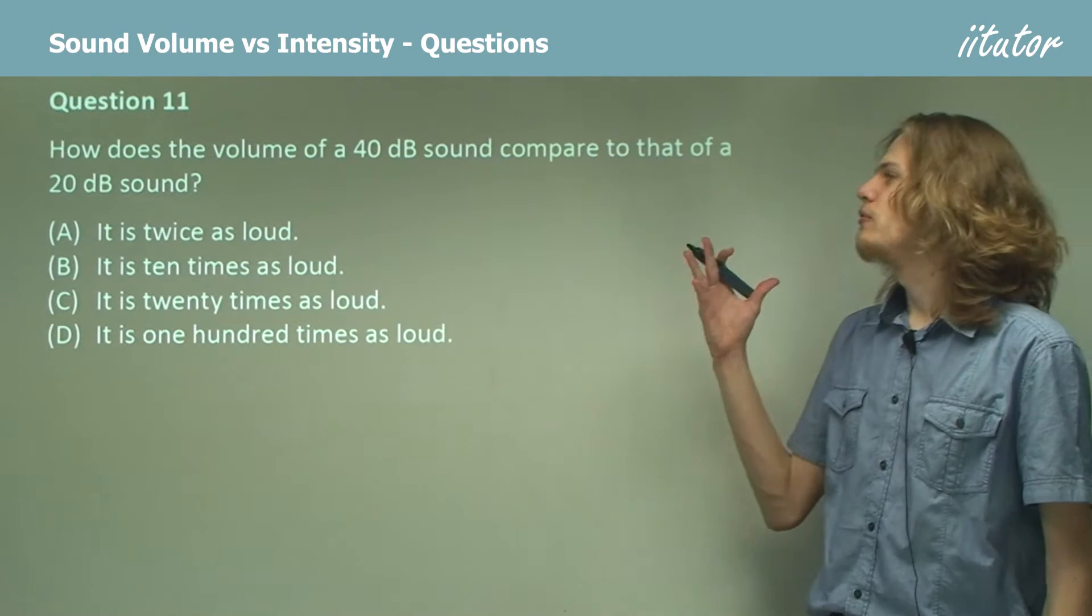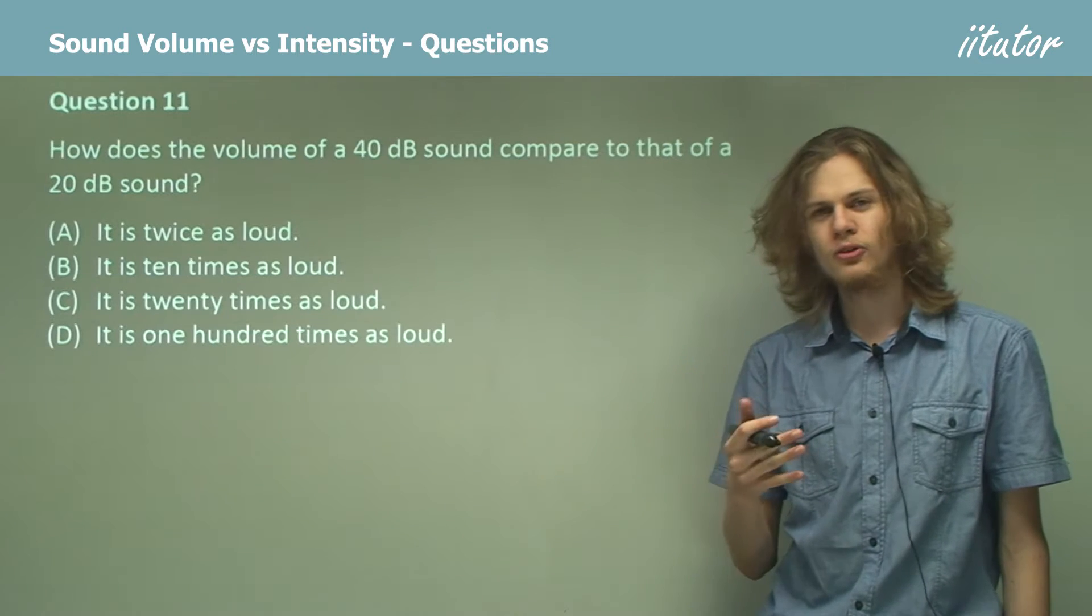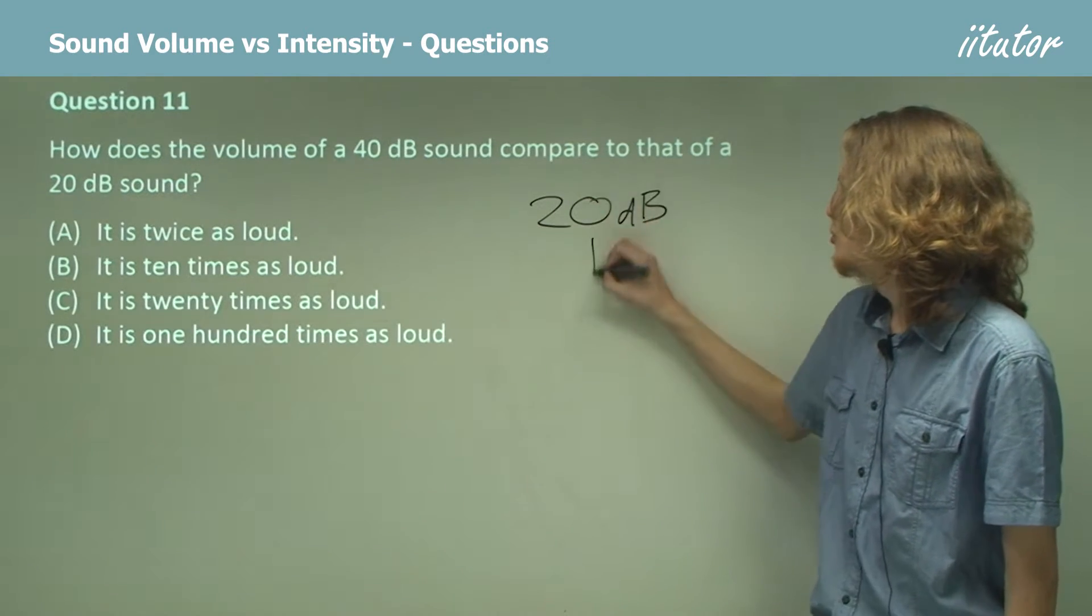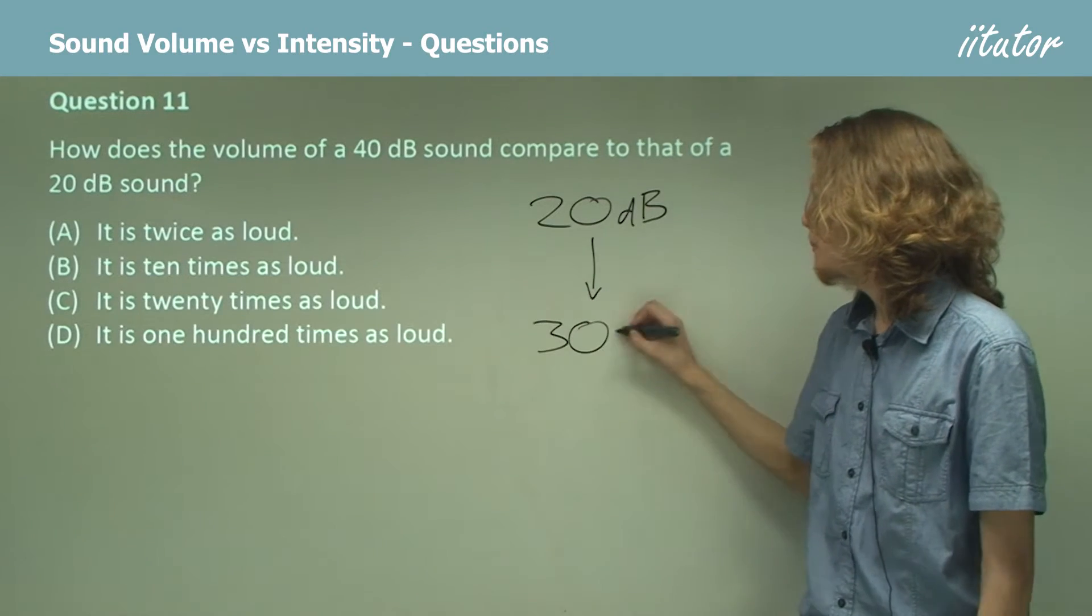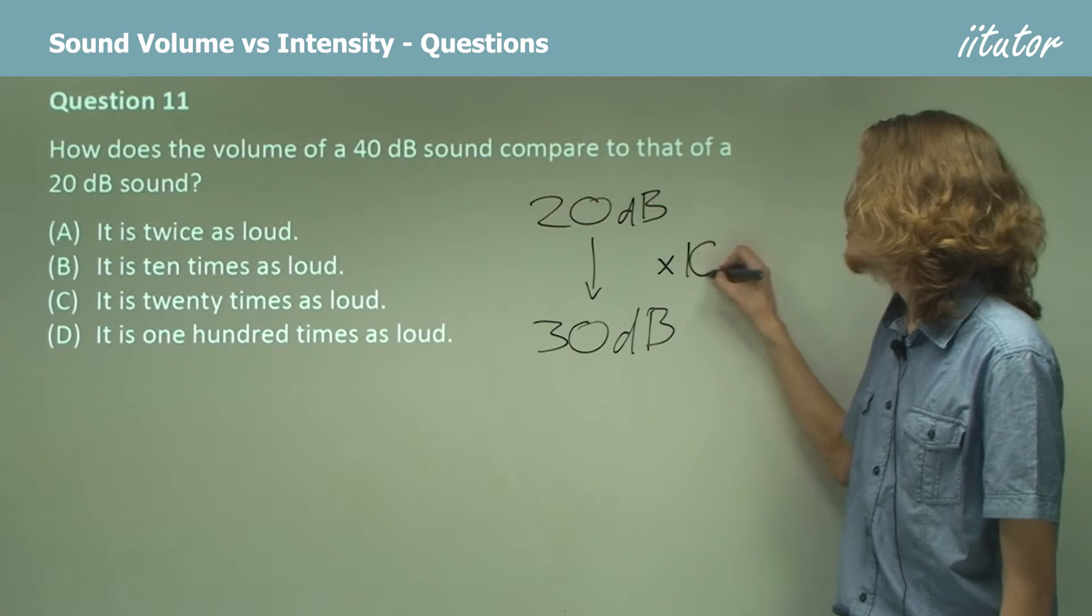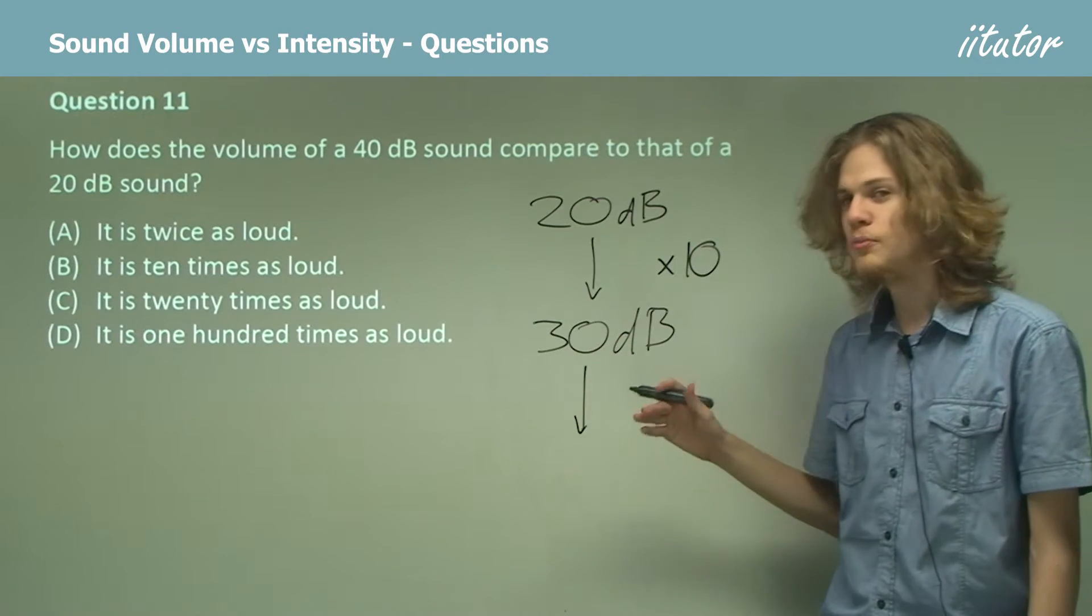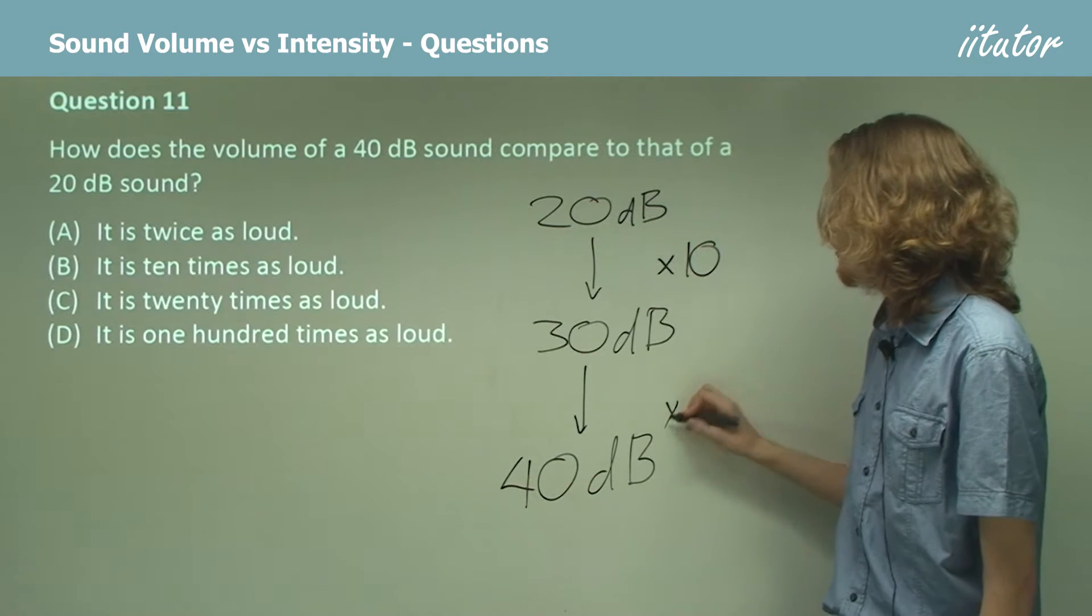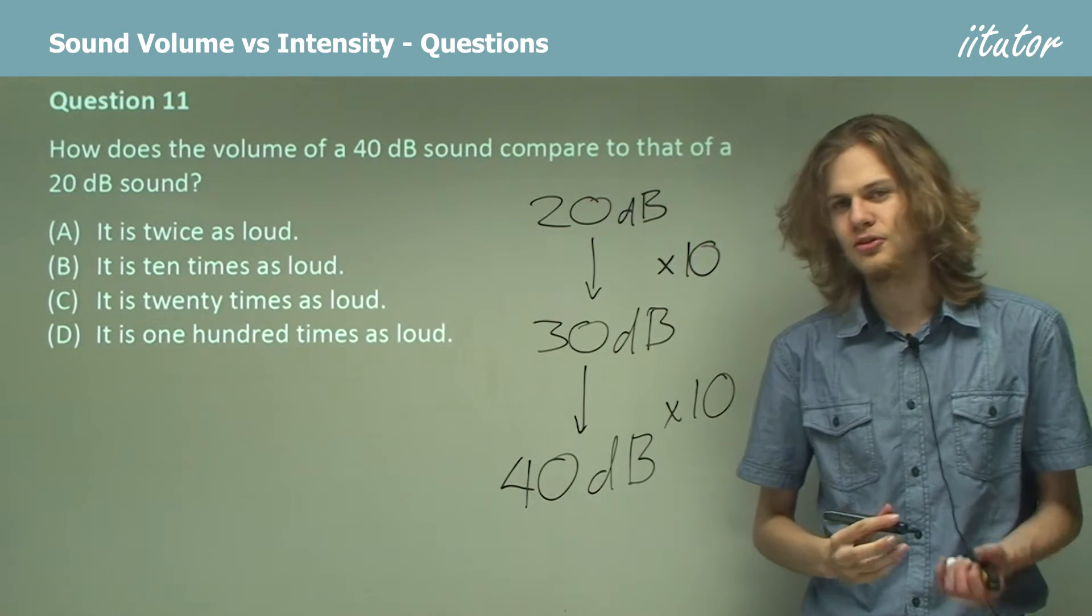We know that if we increase the volume of something by 10 decibels, it's 10 times louder. So if we go 20 decibels to 30 decibels, then the 30 decibel sound will be 10 times louder. And if we go from 30 decibels to 40 decibels, then the 40 decibel sound will be 10 times louder than the 30 decibel sound.